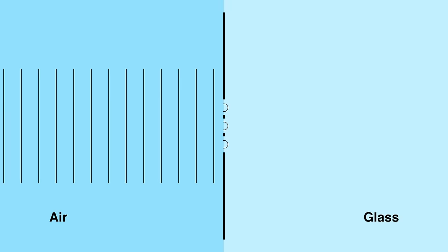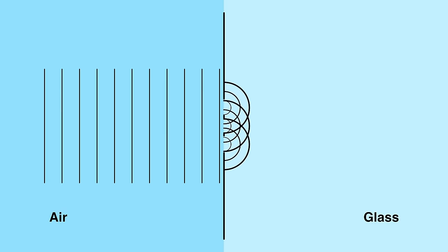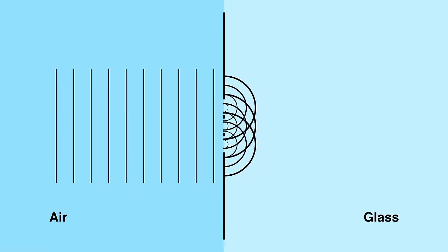If waves hit more than one gap, each gap will allow waves to pass through and make ringlets. The waves from each gap can interfere with one another, with the waves either adding to or subtracting from one another.